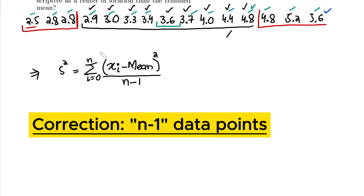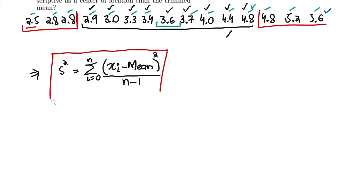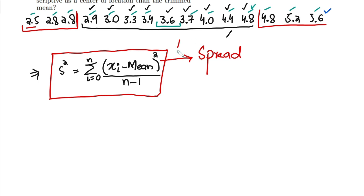All the data points we have — we subtract the mean from each, square them, add them all together, and at the end divide by n minus 1. That is the formula for the variance of a data set, which basically shows us the average spread of the data.